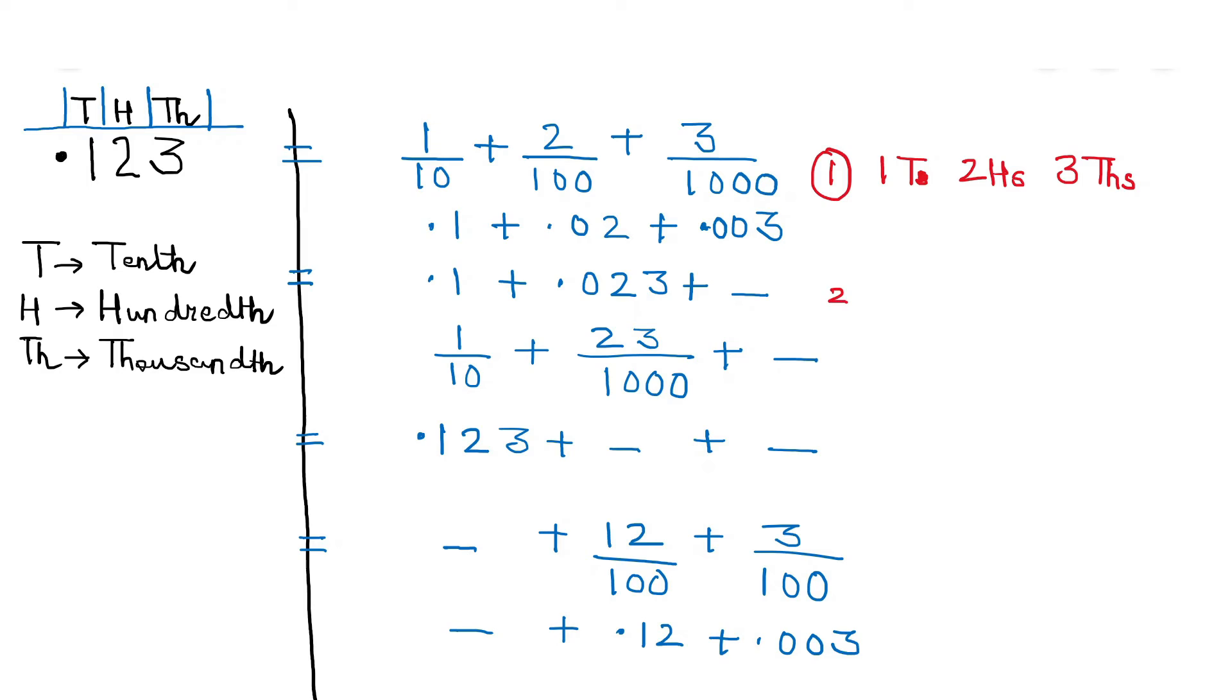In the second case now we will write it as 1 tenth followed by 23 hundredths. Third case: one hundred and twenty-three thousandths. Fourth case: twelve hundredths and three thousandths.